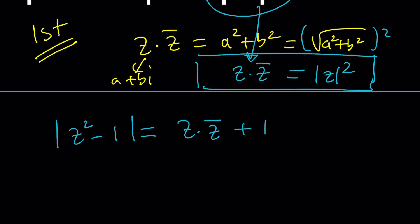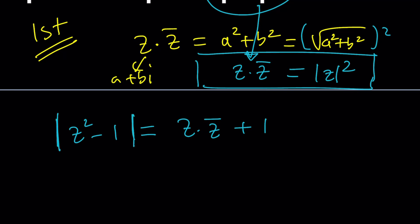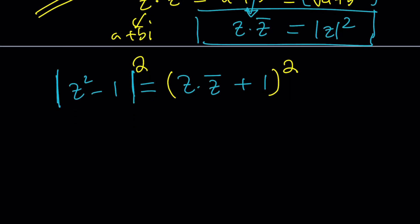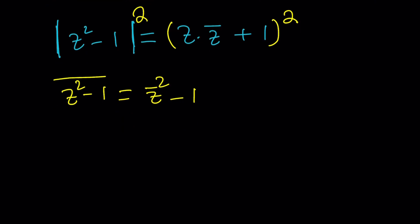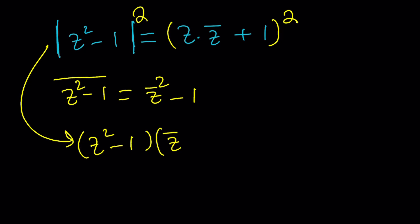Now we want to square both sides, because we have an absolute value on the left side and we want to take advantage of the same identity one more time. When you square |z² − 1|, it's equivalent to the product of z² − 1 and its conjugate, which is z̄² − 1.